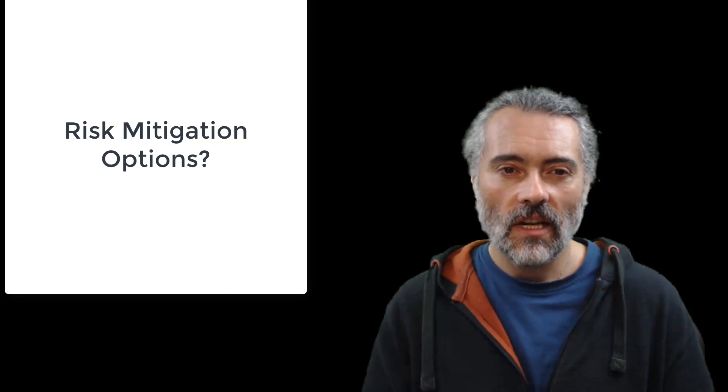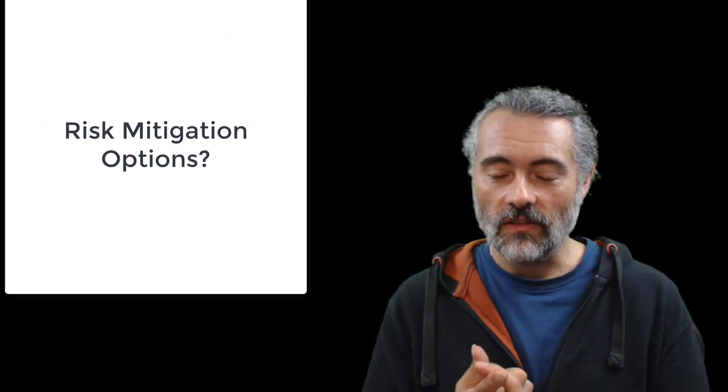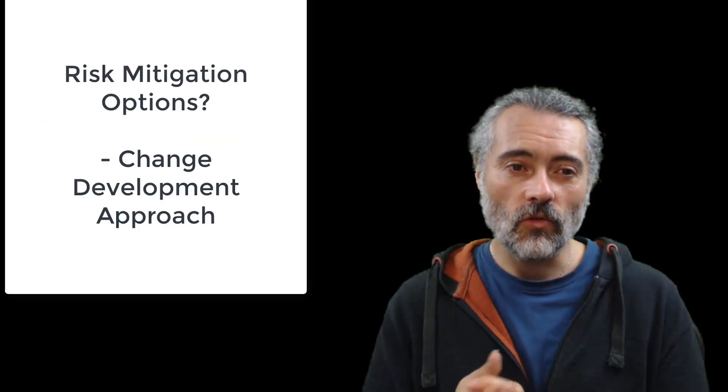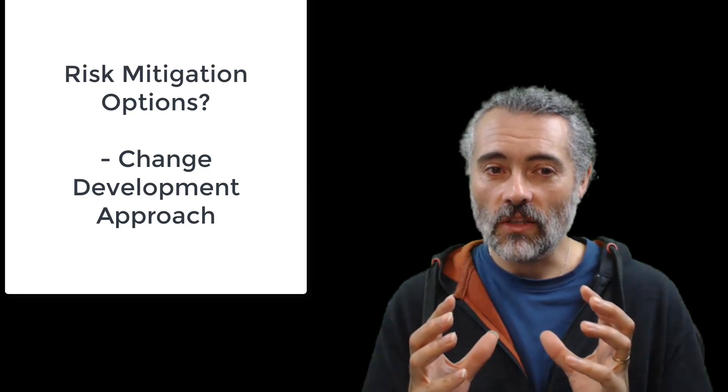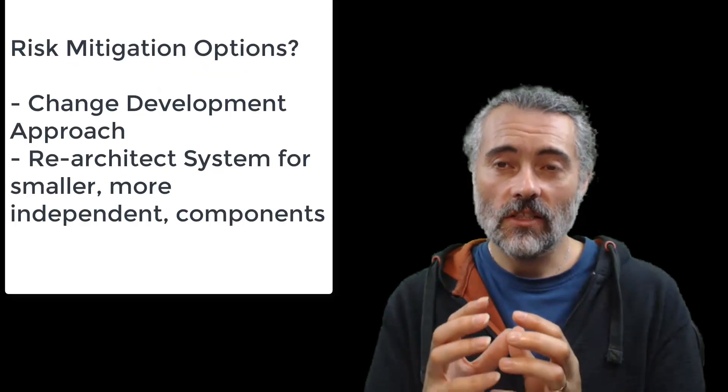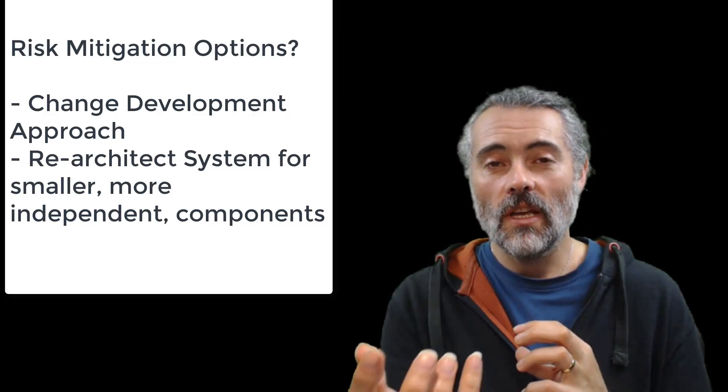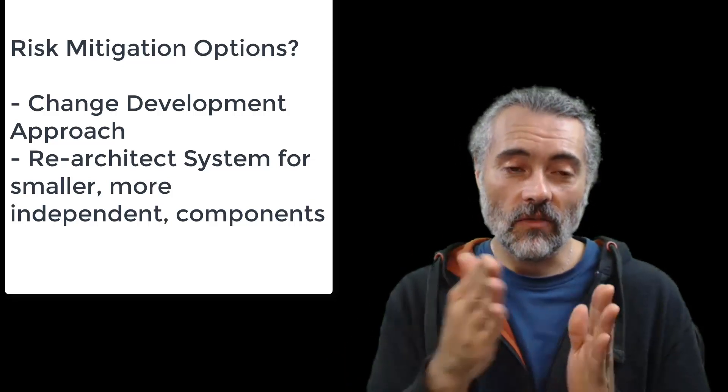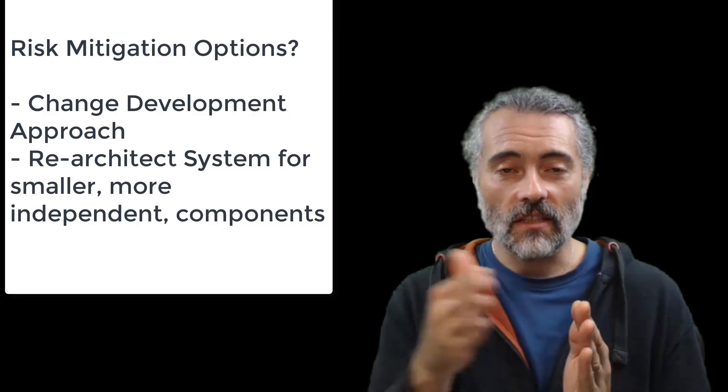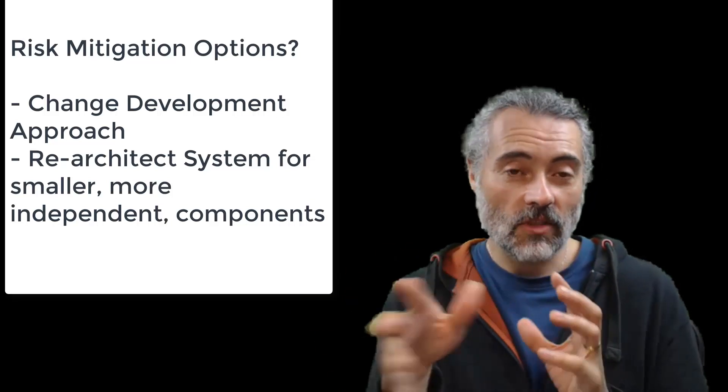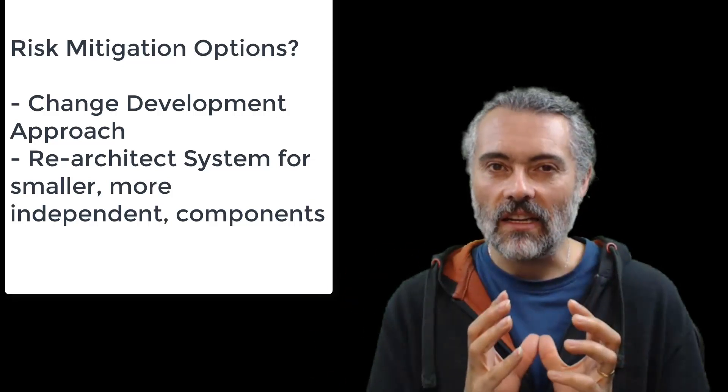How else could we mitigate that risk? We could change our development approach to help with this. We could re-architect it to allow us to build in smaller components so that when we make a change in one component, there's a reduced risk of change in another one because it hasn't actually changed. And then if we do all the interface testing and integration testing around that, perhaps it will work. Perhaps we can architect to avoid this.